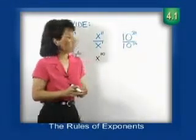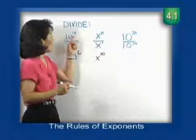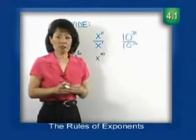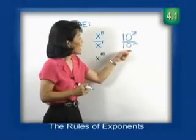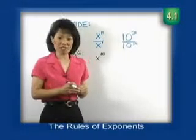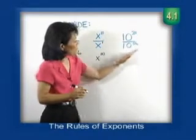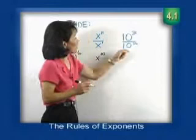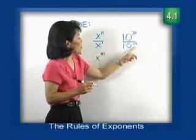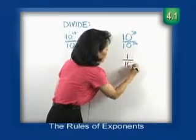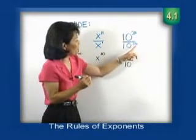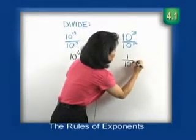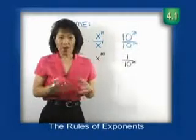In this third problem, we have 10 to the 31st in the numerator and 10 to the 56th in the denominator, so there are more tens downstairs than upstairs. Once we ran out of tens in the numerator, we'd still have some tens left in the denominator. The rule is basically the same — instead of subtracting 31 minus 56, we do it in the other direction: 56 minus 31 is 25. So that leaves 1 over 10 to the 25th.